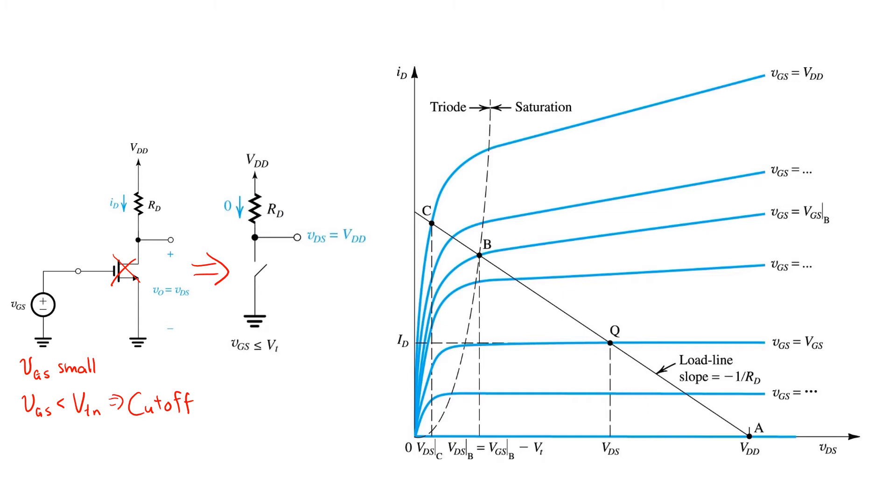As a result, zero current would flow through the transistor, and hence through the resistor RD, and the output voltage VDS would simply be VDD, because there's no voltage drop on resistor RD.